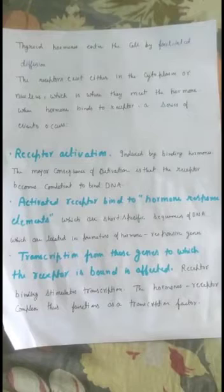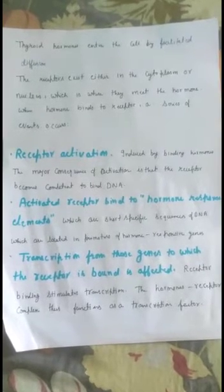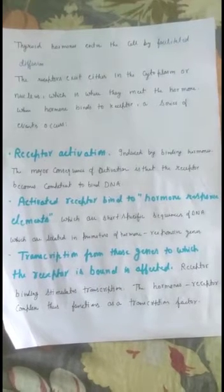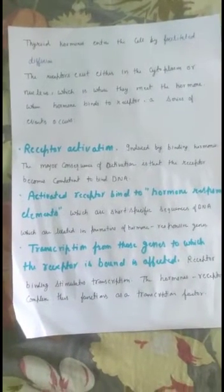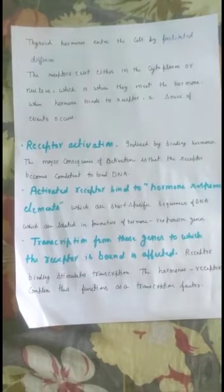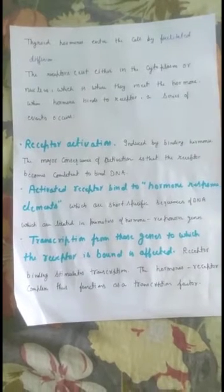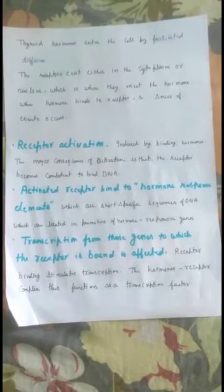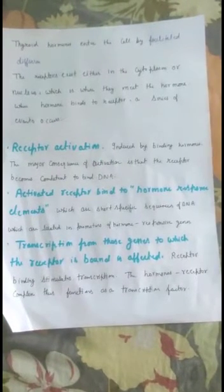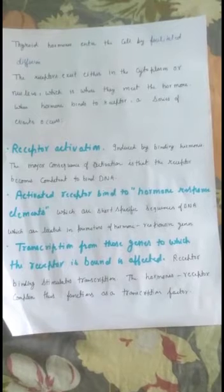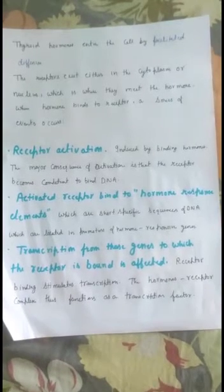When the hormone binds to the receptor, a series of events occurs. Receptor activation is induced by the binding hormone. The major consequence of activation is that the receptor becomes competent to bind DNA. The activated receptor then binds to hormone response elements, which are short specific sequences of DNA located in the promoter of hormone-responsive genes.